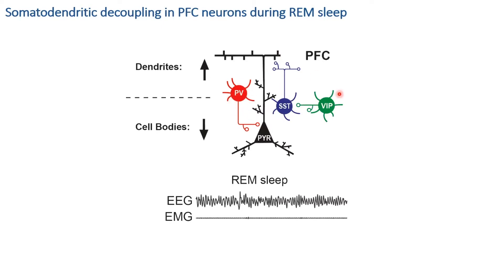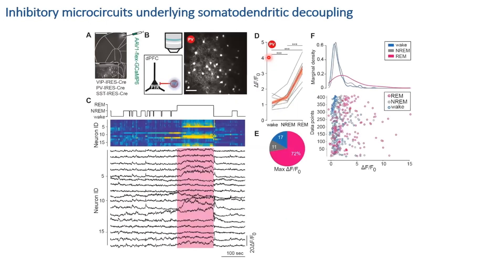There are several types of interneurons targeting different parts of principal neurons or other inhibitory neurons. We focused on parvalbumin interneurons, known to target cell bodies of principal cells, and VIP and somatostatin inhibitory neurons, involved in dendritic disinhibition — because VIP interneurons inhibit somatostatin, which in turn provides inhibition at the dendritic level. We used two-photon calcium imaging with PV-Cre mice to genetically target parvalbumin interneurons and express a calcium indicator in this inhibitory subclass.